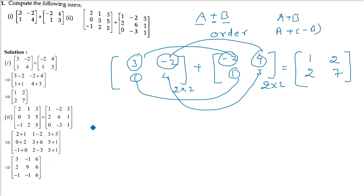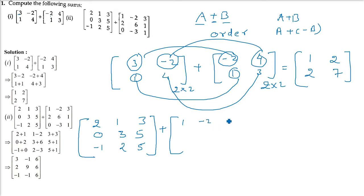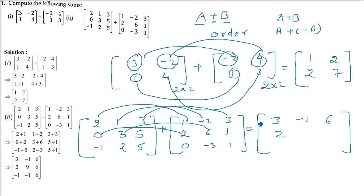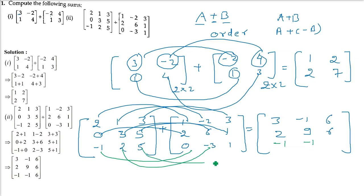Now let us do the second part. This is a 3 by 3 matrix and both are 3 by 3, so we can add. Adding corresponding elements: 2 and 3 gives 0, 3, 5; negative 1, 2, 5. Then 1, 2; 1 minus 2, 3, 2, 6, 1; and 0, negative 3, 1. Adding: 2 and 1; both are 3 by 3. Results: 3, negative 1; 3 and 3 gives 6; 0 and 2; 3 and 6; 5 and 1 gives 6; negative 1 and 0 gives negative 1; 2 and negative 3 gives minus 1; 5 and 1 gives 6.